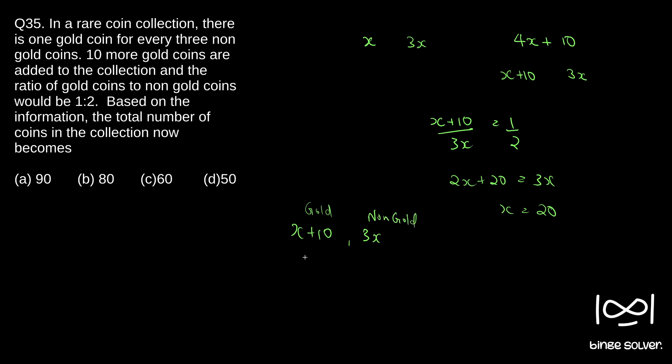Now, so X is 20, so X plus 10 becomes 30 and 3 into 20 is 60, so total sum is 90. So correct answer is A. Solution to question 35 is A.